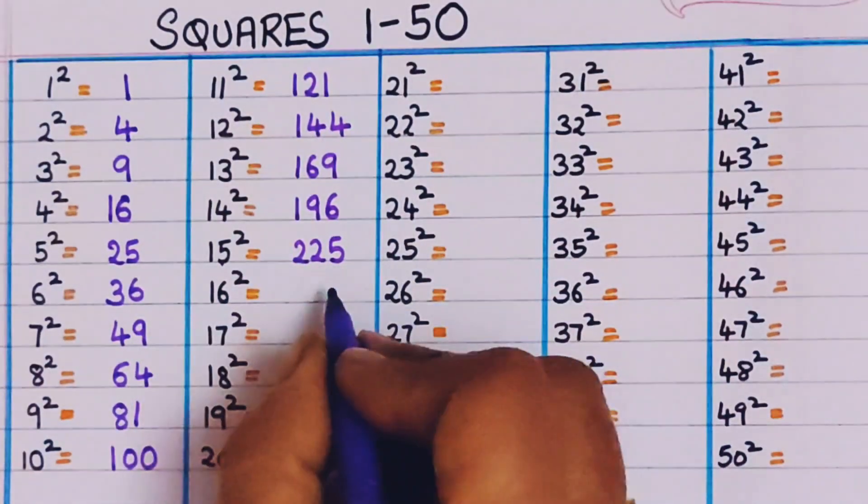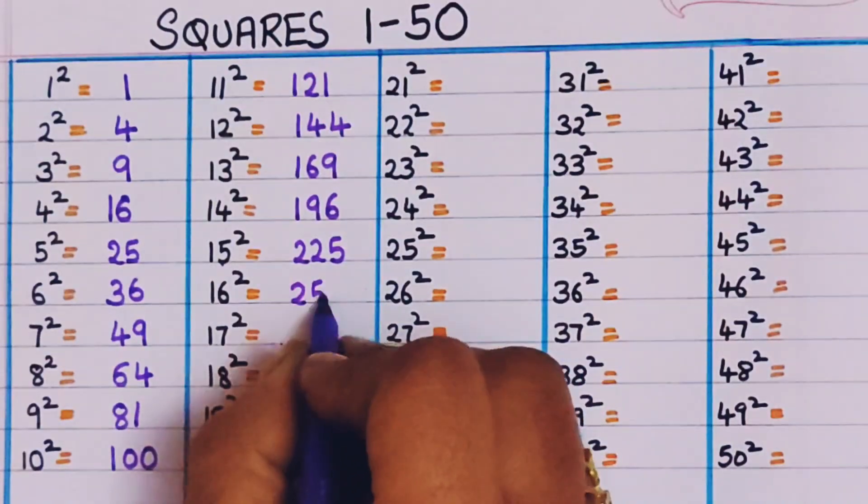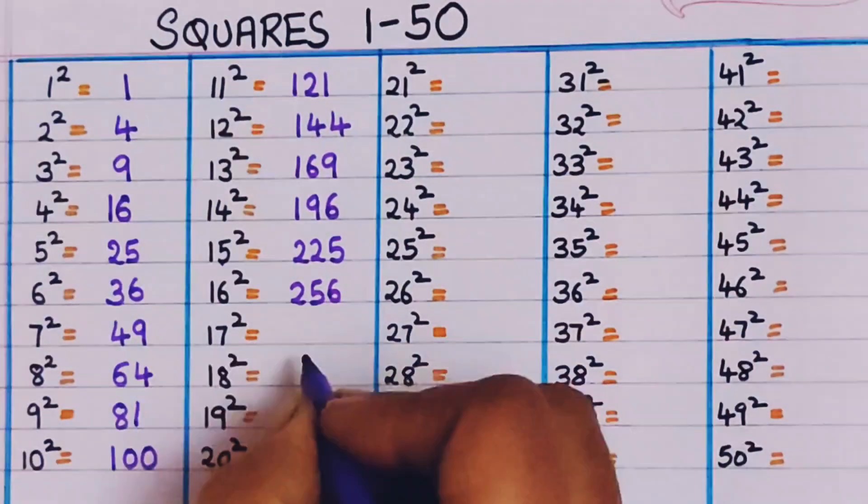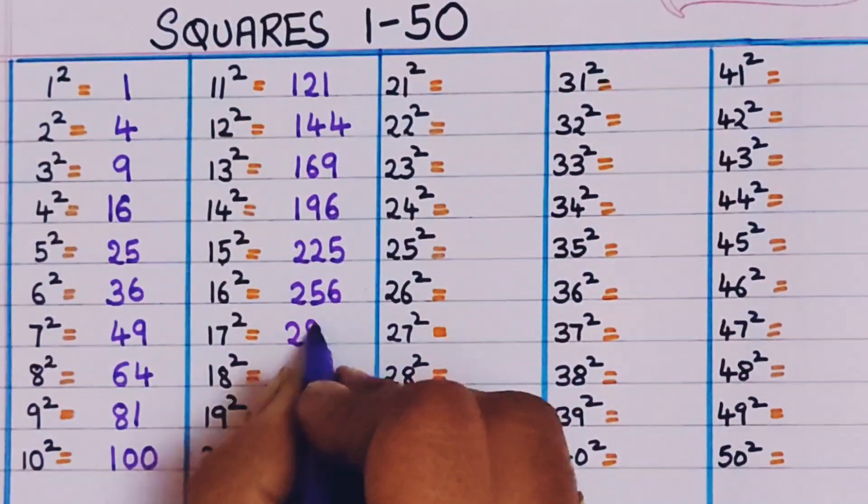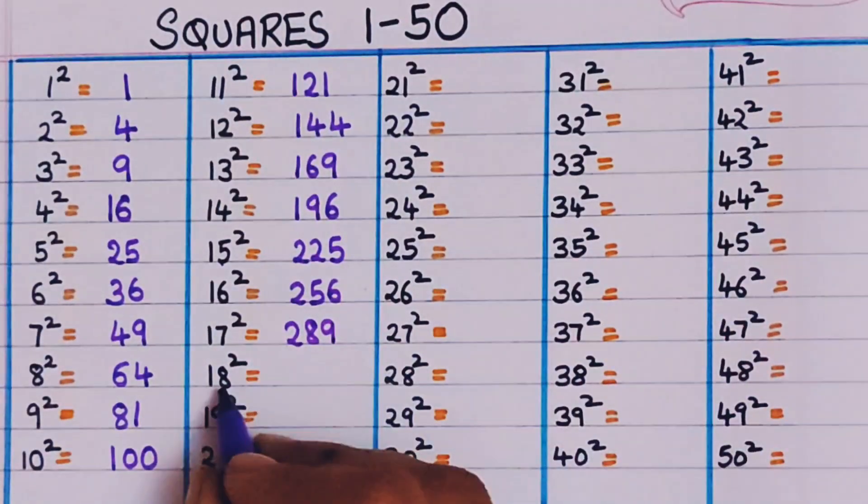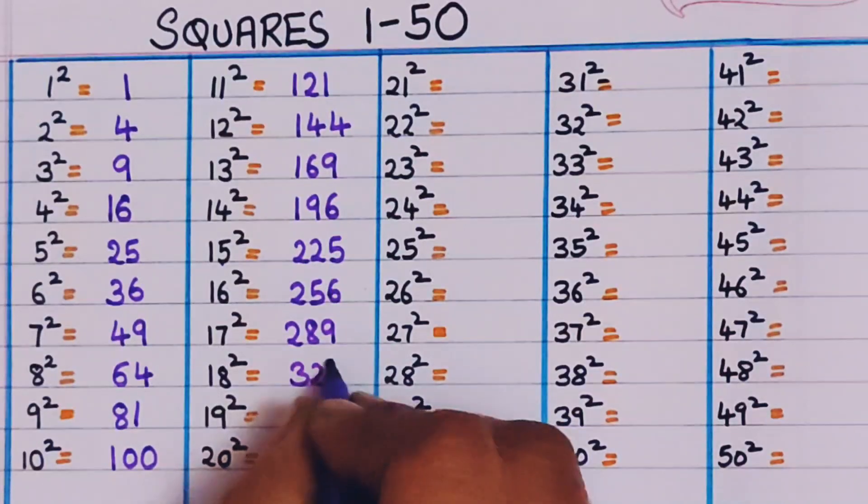16 square, 256. 17 square, 289. 18 square, 324.